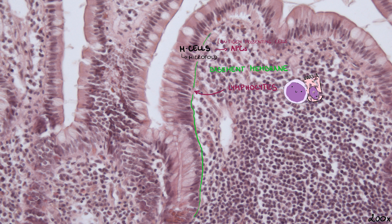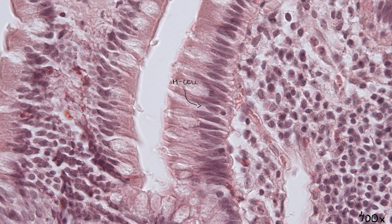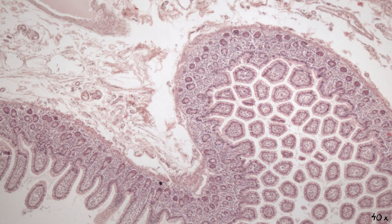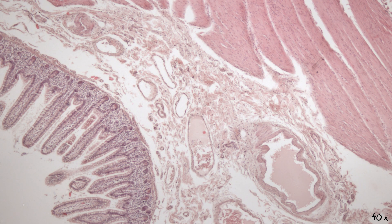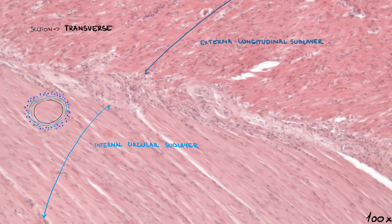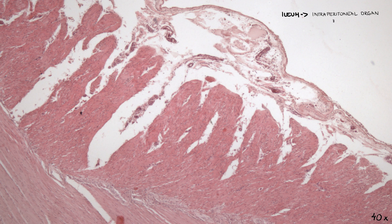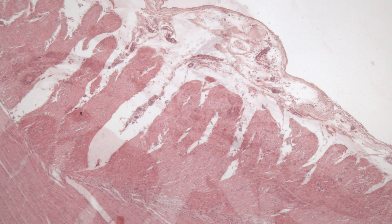Enterocytes also help in the antigen-presenting process. A feature typical of M cells are invaginations of their basal membrane, within which lymphocytes are usually located — a feature that can be used to distinguish M cells from enterocytes in section. As for the structure of the wall, it is the same as in the duodenum and jejunum. In this transverse section, we can see the nuclei of smooth muscle cells in the external longitudinal sub-layer cut transversely. There is an Auerbach's plexus between the sub-layers. Like the jejunum, the ileum is an intraperitoneal organ covered by serosa, made up of loose connective tissue covered by mesothelium.